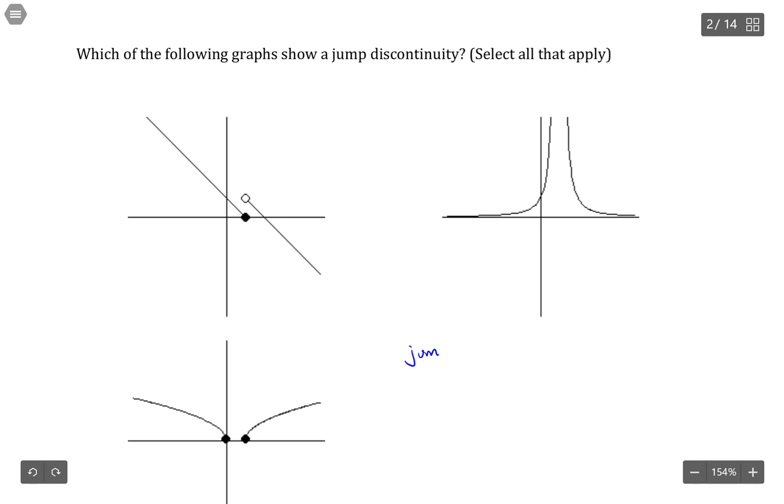what happens is the limit as x approaches some particular value from the left of a function is not equal to the limit as x approaches that value from the right of that function.